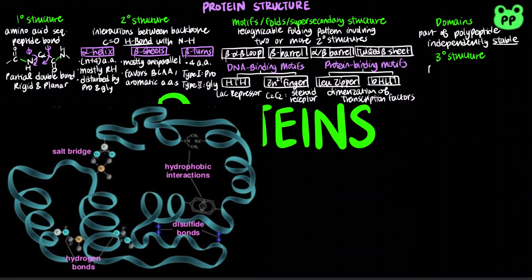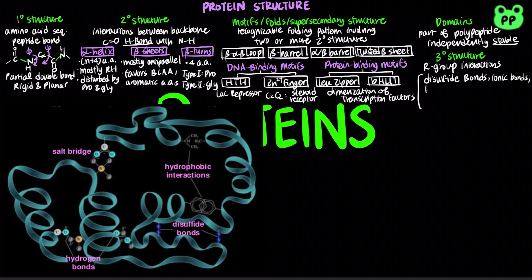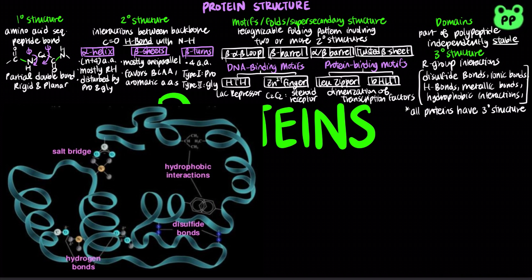A protein's tertiary structure is determined by interactions between R groups, including disulfide bonds, ionic bonds, hydrogen bonds, metallic bonds, and hydrophobic interactions. All proteins have tertiary structure.